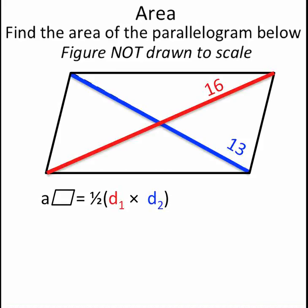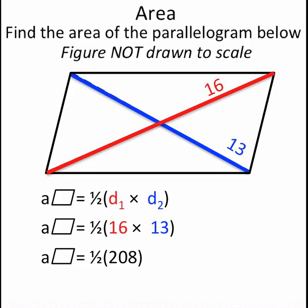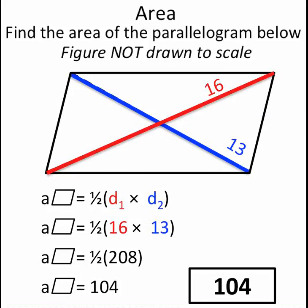So I can use substitution and substitute those values into the equation to create a new equation, which is 1 half times 16 times 13. Multiply that out to get 1 half of 208, or 104. So the area of this parallelogram is 104.